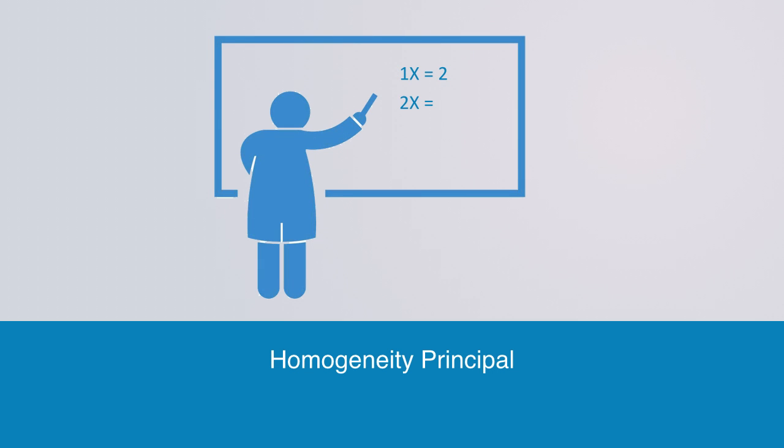Our second superposition principle, what is called homogeneity, states that the output to a linear system is always directly proportional to the input. So if we put twice as much into the system, we will in turn get twice as much out.